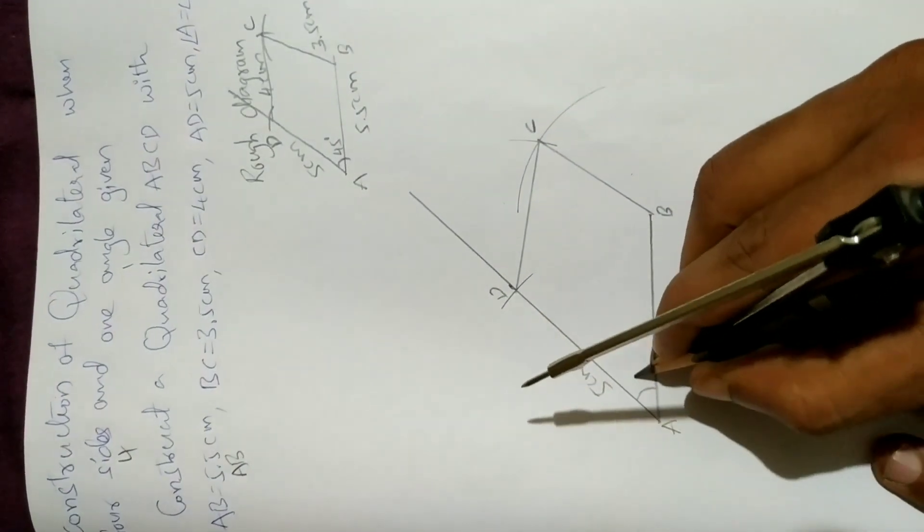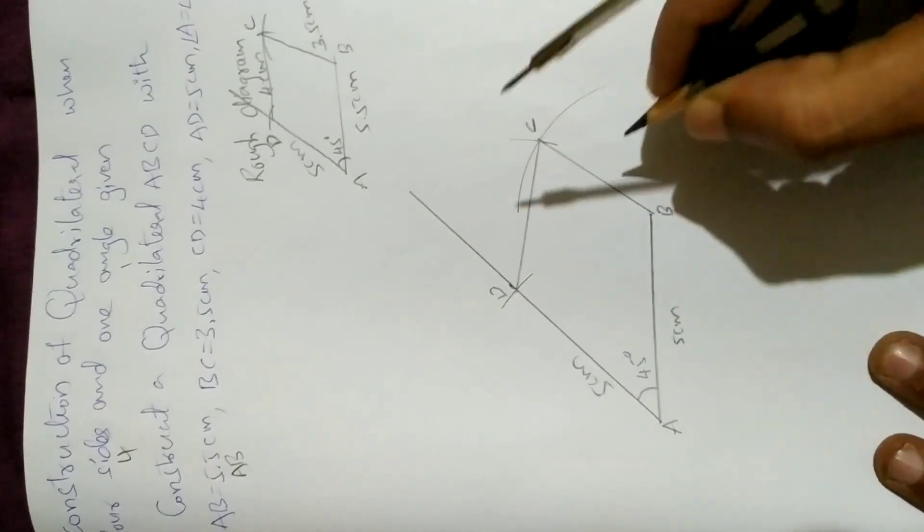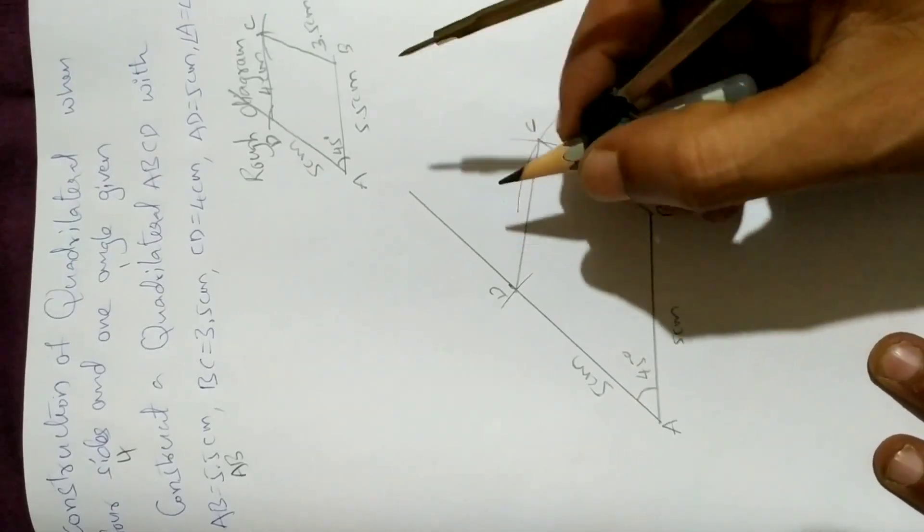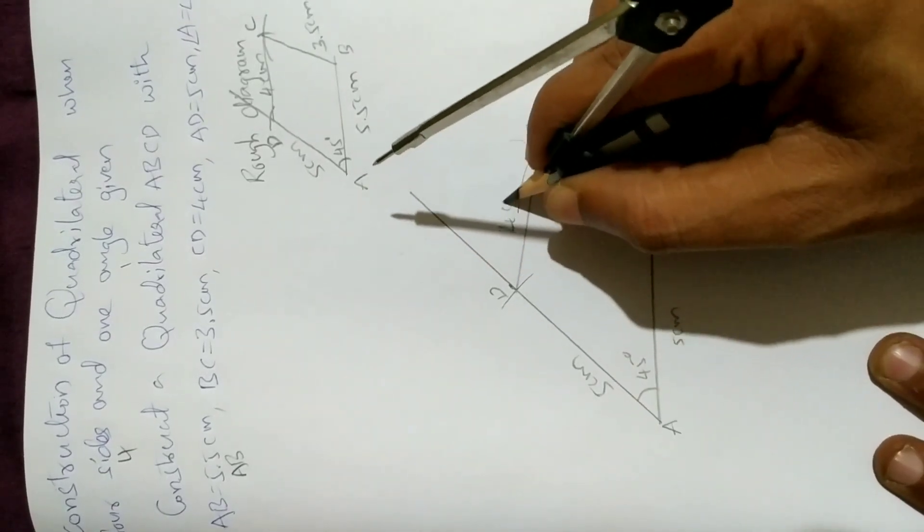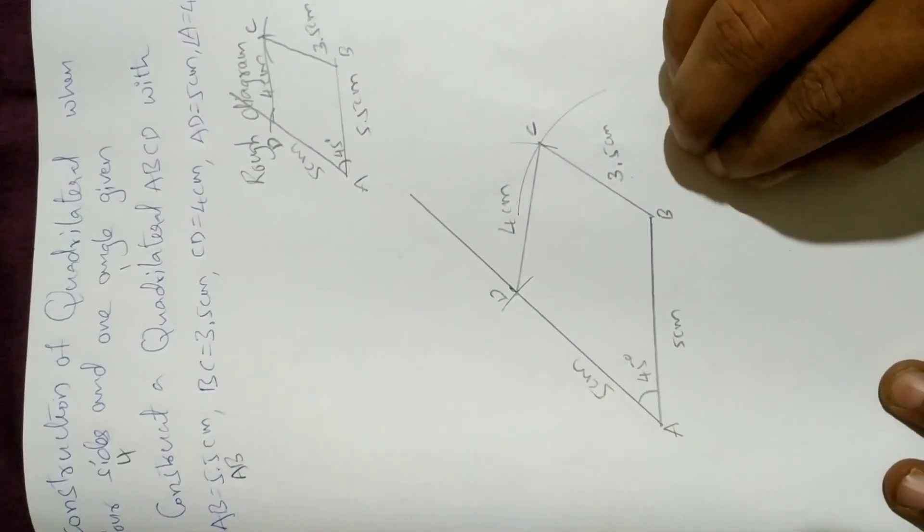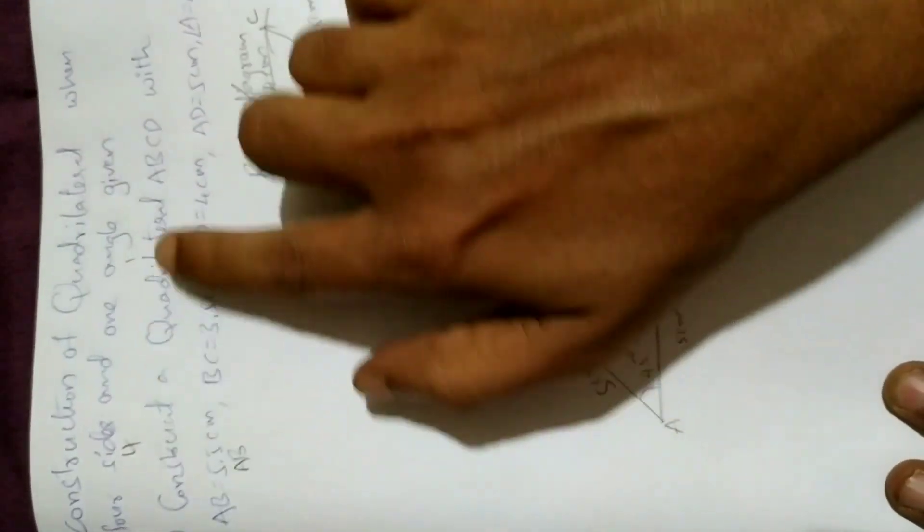Now you can verify the measurements. This is 45 degrees, this is 3.5 centimeters, and this is 4 centimeters. Finished. So in this way you can construct a quadrilateral when 4 sides and 1 angle are given.